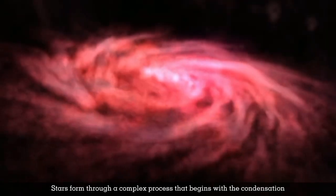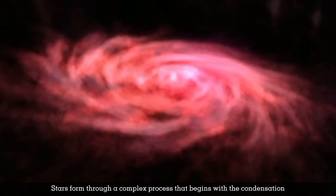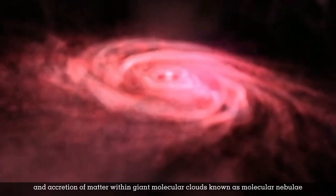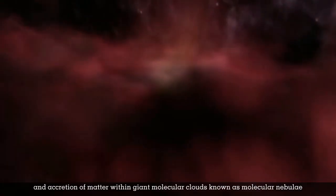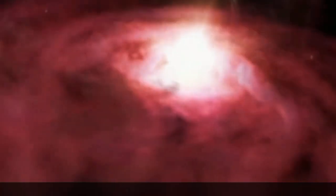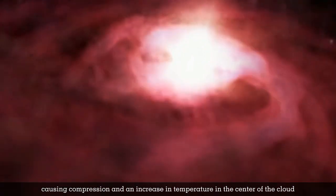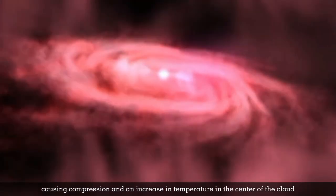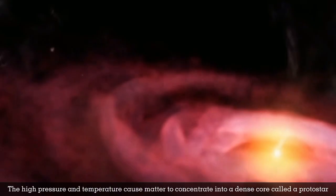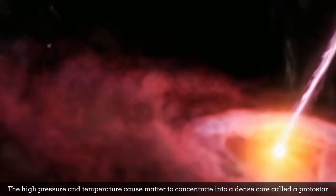Stars form through a complex process that begins with the condensation and accretion of matter within giant molecular clouds known as molecular nebulae. First of all, gravity begins to act on the molecular cloud, causing compression and an increase in temperature in the center of the cloud. The high pressure and temperature cause matter to concentrate into a dense core called a protostar.